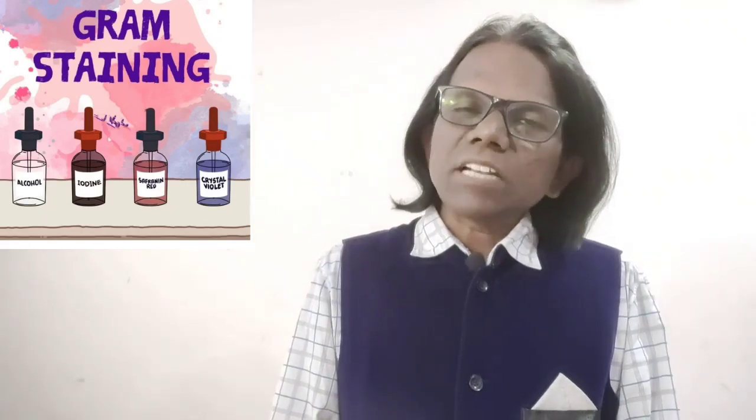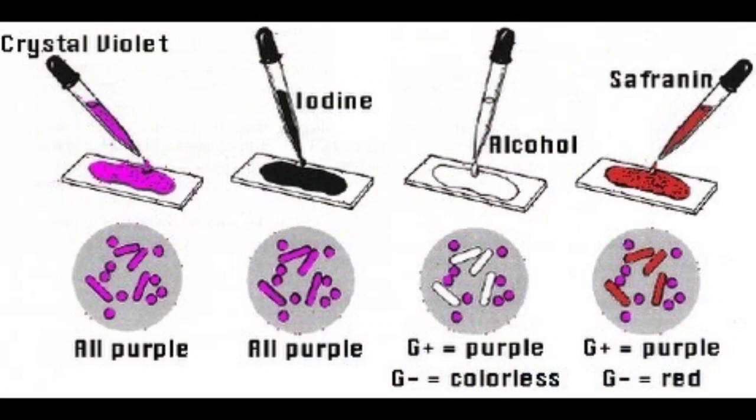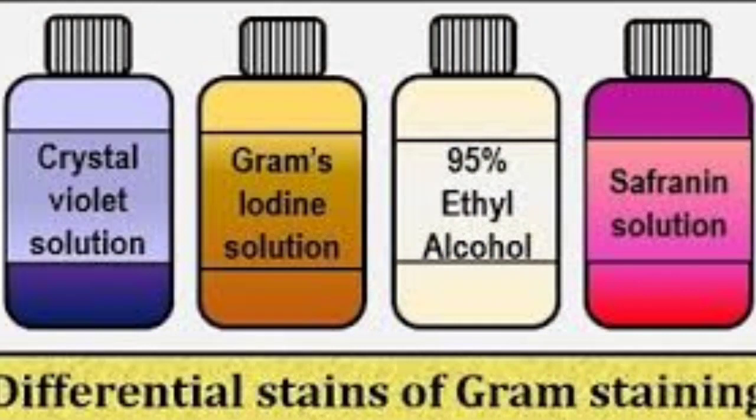Four reagents are used in the gram staining process. Reagent 1 is crystal violet. Reagent 2 is Gram's iodine, which acts as a mordant. Reagent 3 is alcohol, which acts as a decolorizing agent — either acetone with ethanol 50% or 95% ethanol can be used. Reagent 4 is safranin, which acts as the counter stain.